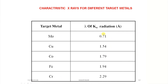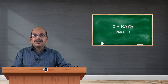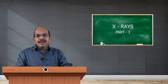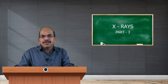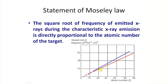For different target metals, the wavelength corresponding to K alpha is different. This variation depends on the type of the target atom, and based on his experiments Moseley proved that the frequency depends on the atomic number. He put forward a law known as Moseley's law: the square root of the frequency of emitted x-rays during characteristic x-ray emission is directly proportional to the atomic number of the target. Plotting atomic number along the x-axis and square root of frequency along the y-axis gives a straight line.